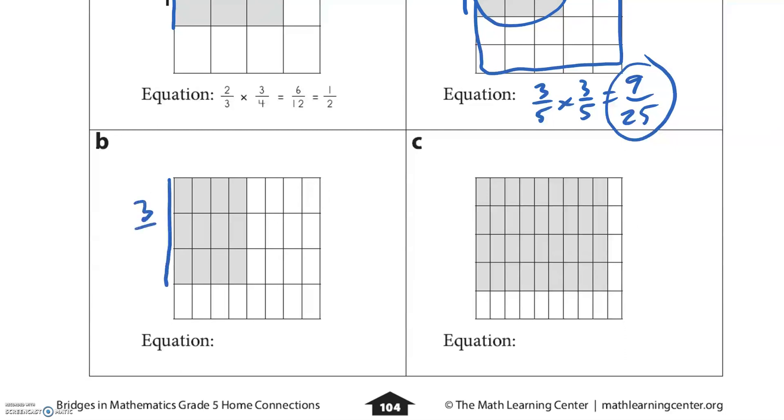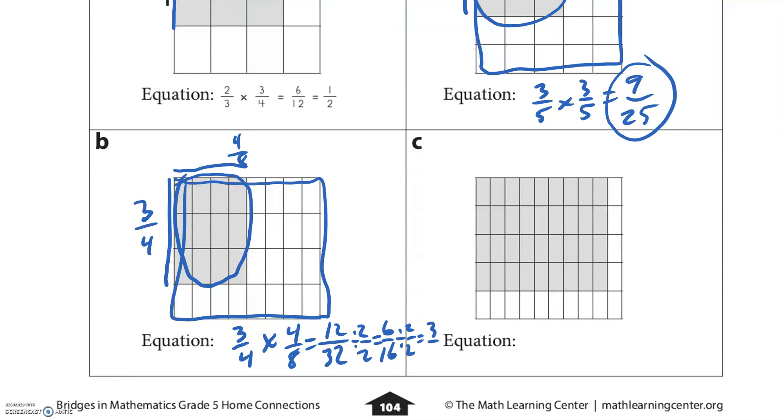Three-fourths times four-eighths. We have three times four equals twelve, and then there's 32 in this whole thing. Let's simplify that. They're both even so I'm gonna divide by two over two, that's six sixteenths, still both even, divided by two over two equals three eighths. I like the three eighths even better.